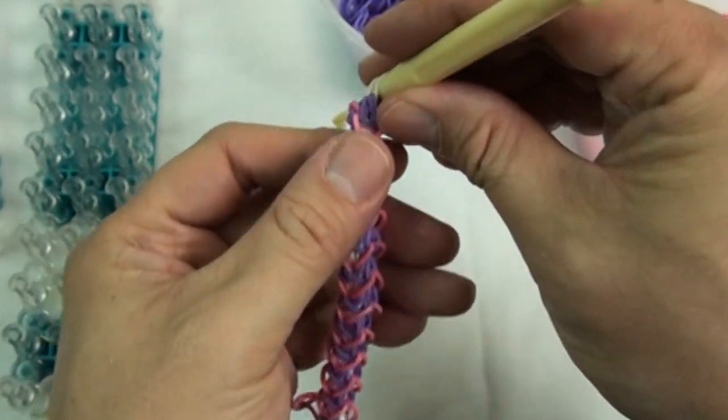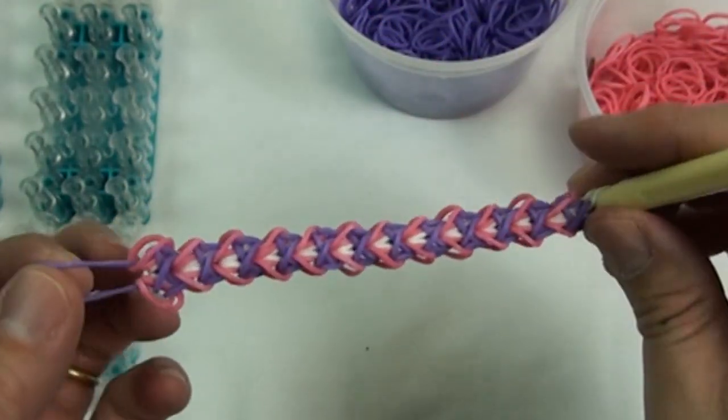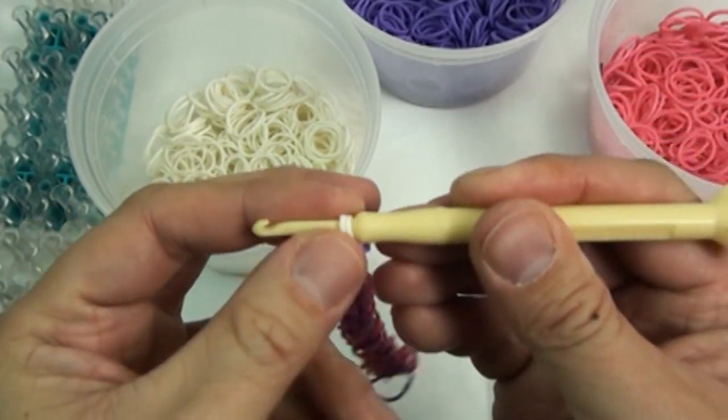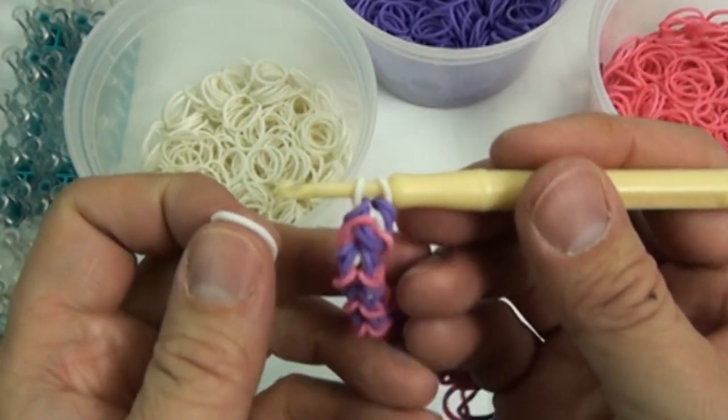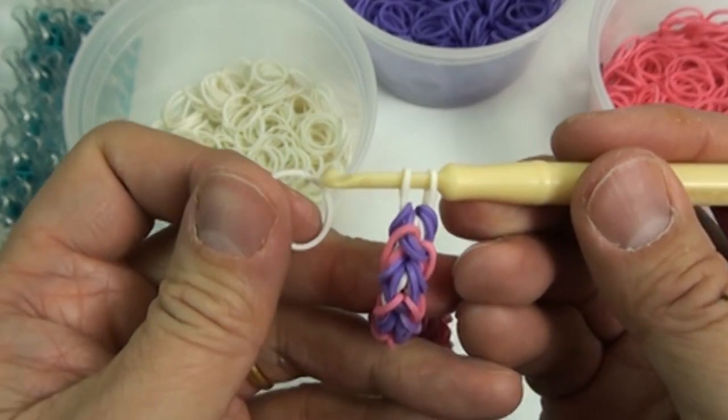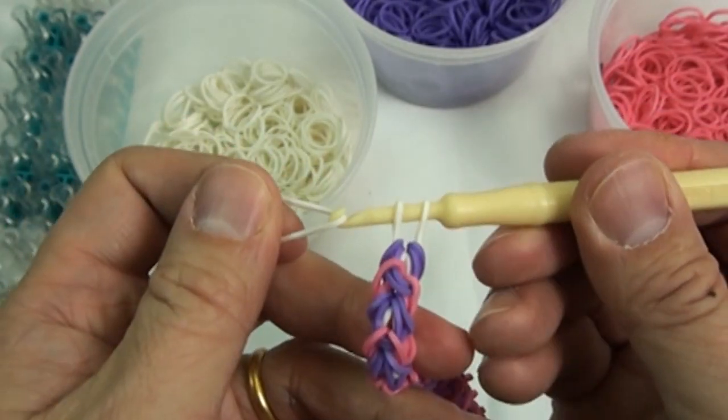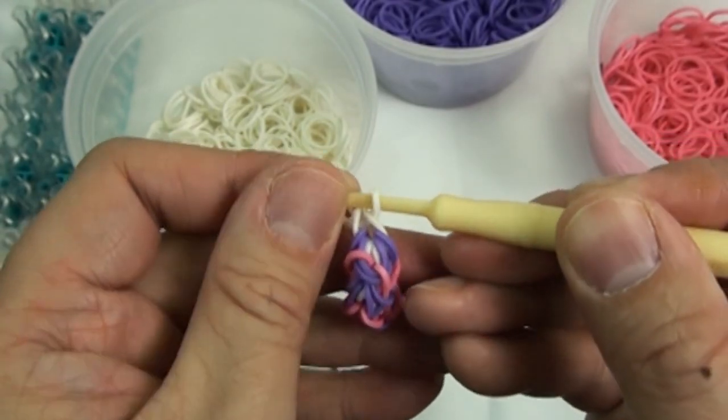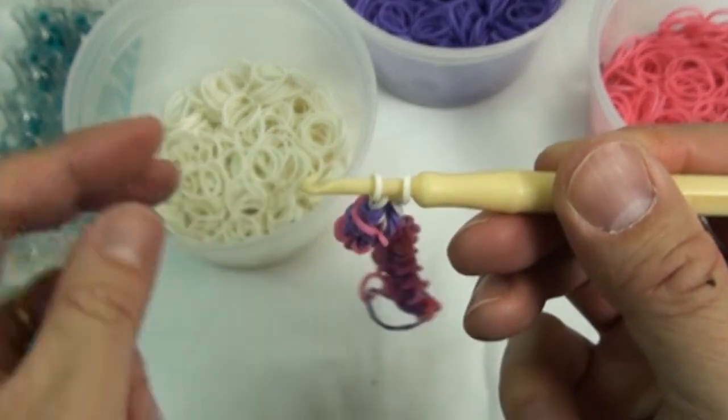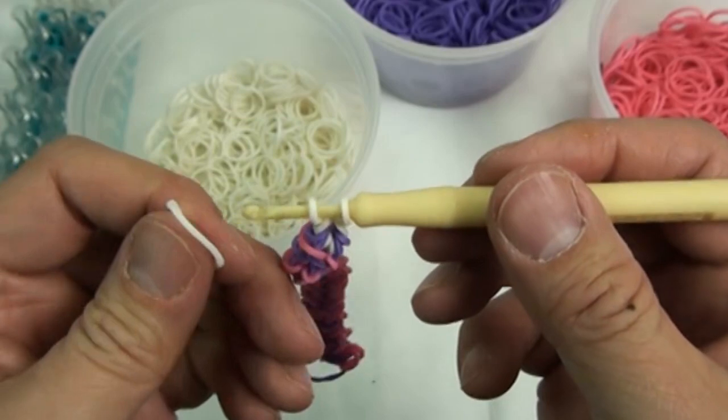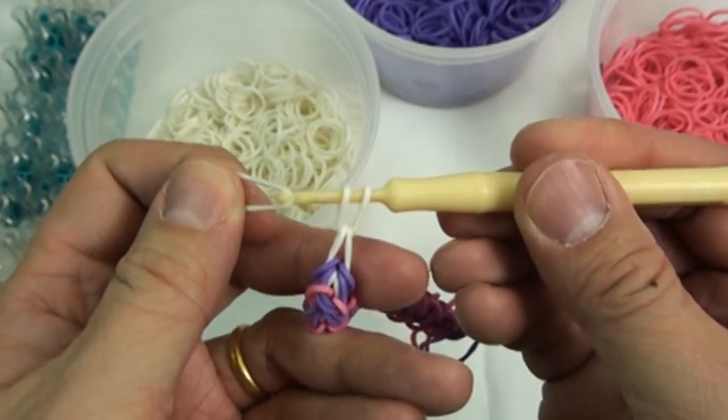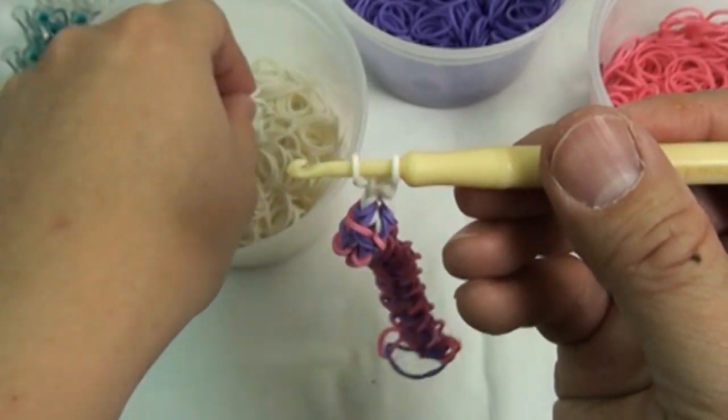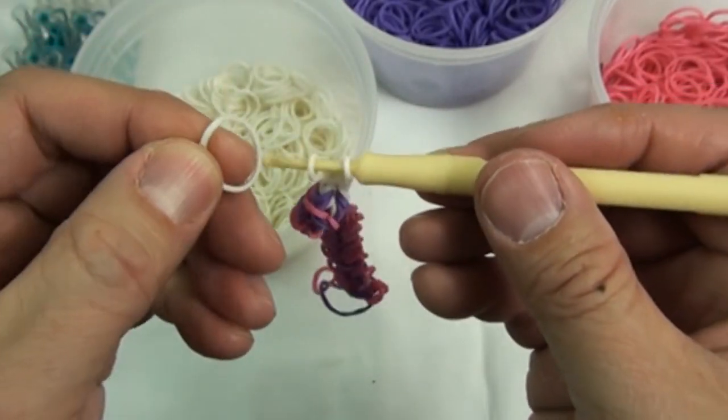Since the bracelet isn't long enough to wear, I will show you how to connect it longer. Pick the rubber band to the hook, loop it through, and then loop it back onto the original one. You will need four or five rubber bands on this end. Secure it with a C-clip once you're done.